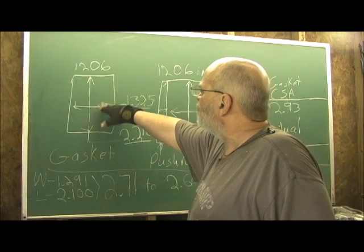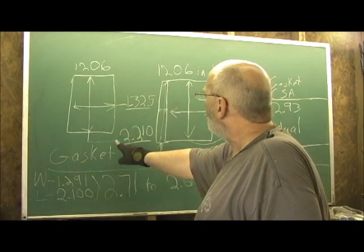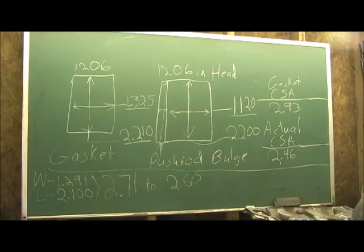Alright now, here we have the 1206 Felpro gasket entrance at 1.325 width and 2.210 top. It would be nice if we could get that.